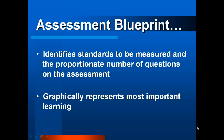A blueprint also includes the proportionate number of questions that should be on the assessment to measure students' understanding of each standard. Levels of question difficulty based on Bloom's taxonomy can also be identified in the blueprint. A blueprint is typically graphically represented as a matrix or chart indicating the total number of questions or tasks in an assessment within each standard or unit. The higher the stakes for the assessment, the more detailed the blueprint needs to be. Some blueprints even include item types and point values for each item.